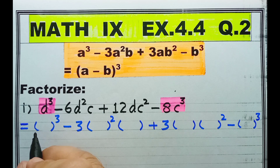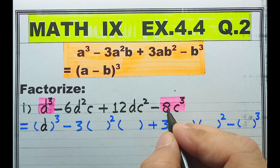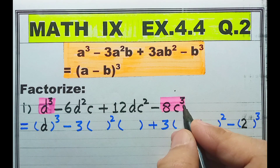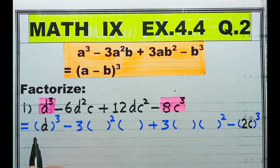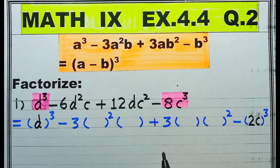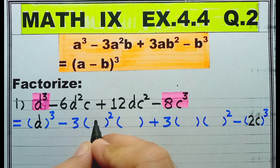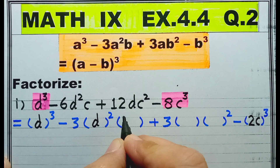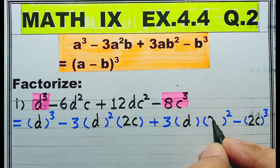So d cubed ka cube root banta hai simply d. Aur 8 cube hai 2 ka. Aur c cubed ka cube root banta hai simply c. Now we have got a and b. Toh ab hum a aur b ko fill up karenge. Yaha par a, yaha par b, yaha par a, aur yaha par b rakhna hai. Toh a hai hamare paas d, aur b hai hamare paas c. A hai hamare paas d, aur b hai hamare paas c.